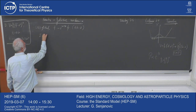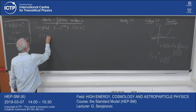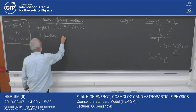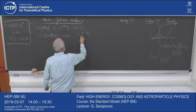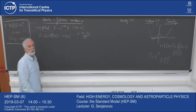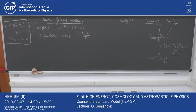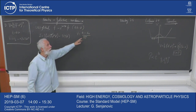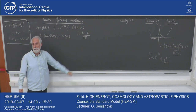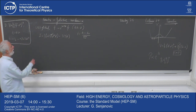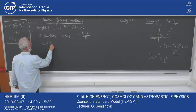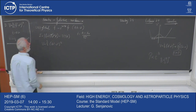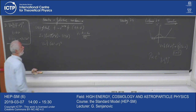How does my Lagrangian look? D mu phi star D mu phi minus V of phi. I want to write this — normally we write with complex number phi = (phi_1 + I phi_2) / sqrt(2) by convention, so that phi_1 and phi_2 have the usual kinetic terms. The potential will be basically the same: lambda over four, times (2 phi-star phi minus V squared), everything squared — putting a factor of 2 phi-squared to keep the normalization consistent.